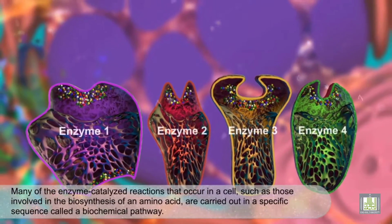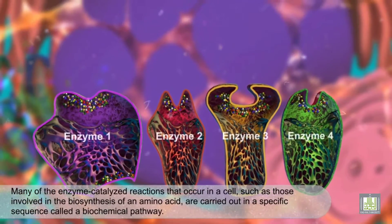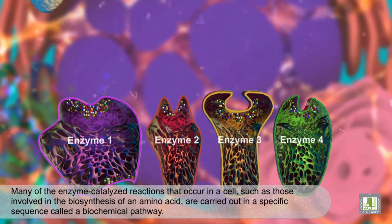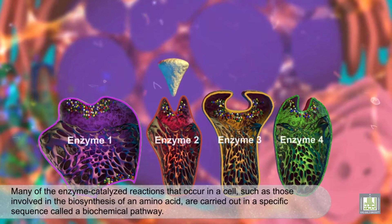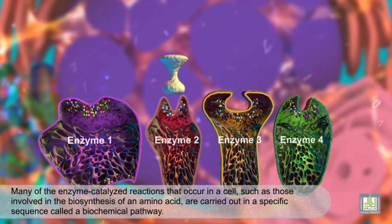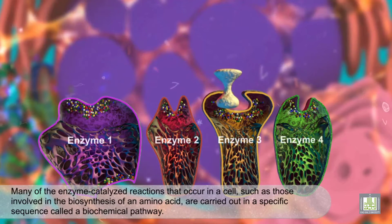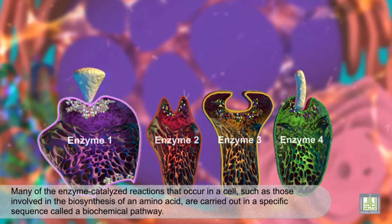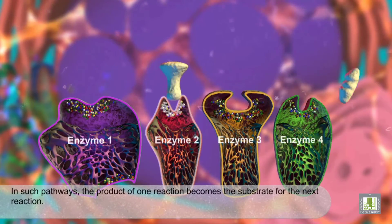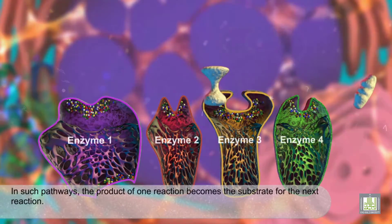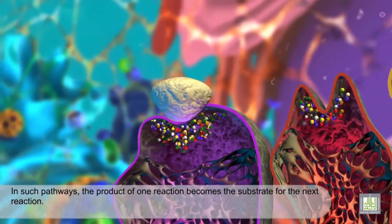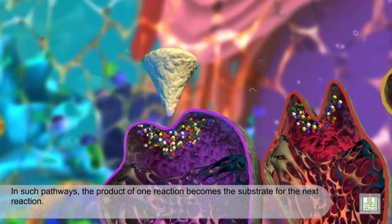Many of the enzyme-catalyzed reactions that occur in a cell, such as those involved in the biosynthesis of an amino acid, are carried out in a specific sequence called a biochemical pathway. In such pathways, the product of one reaction becomes the substrate for the next reaction.